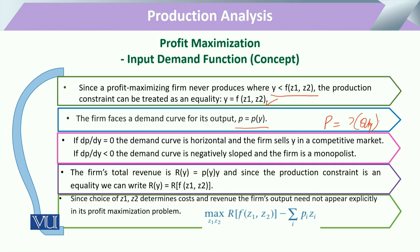Now, if the change in price due to a change in output of the firm is zero, then this will explain a horizontal demand curve. This explains that if the firm is going to change its output or production level, it has no impact on the market price. This is the condition that we have always studied as an assumption of perfect competition. Whenever there is a change in output — either decrease or increase — but it has zero impact on market price, then we can say this firm is moving in a competitive market.